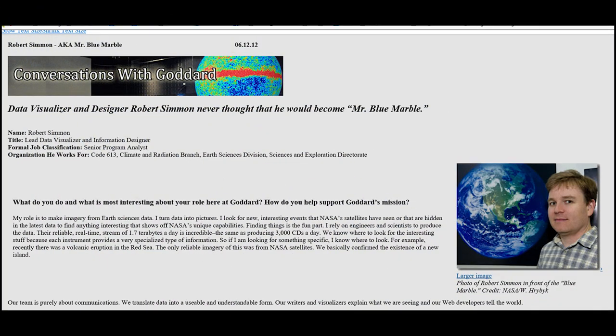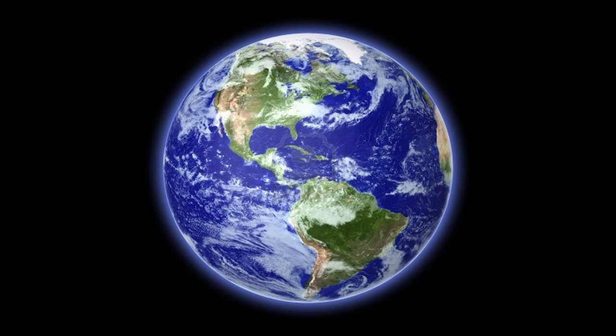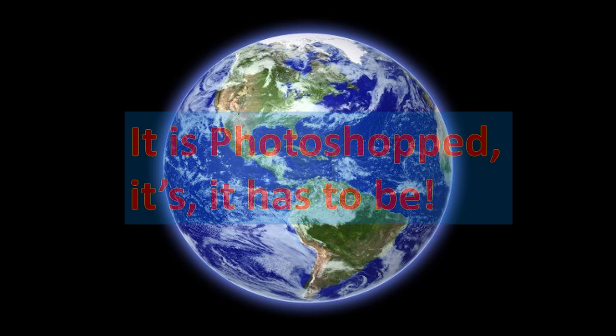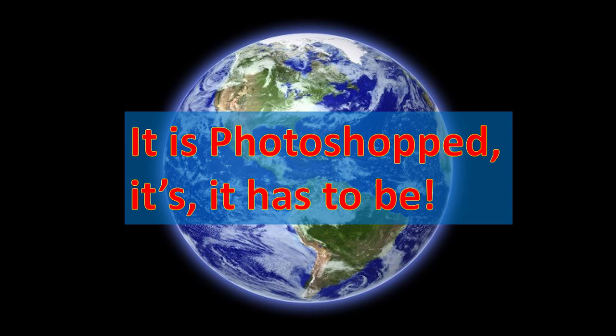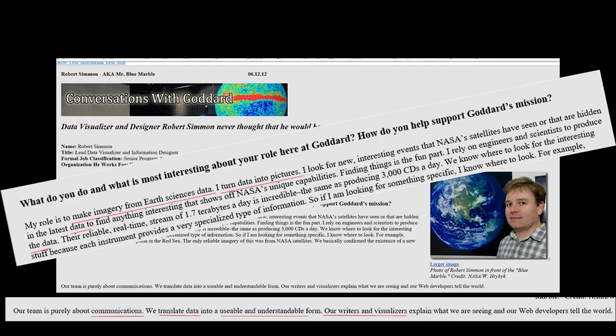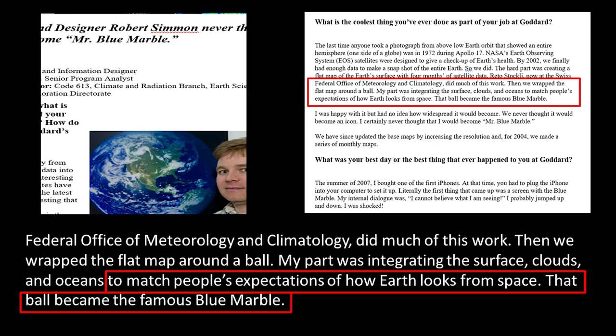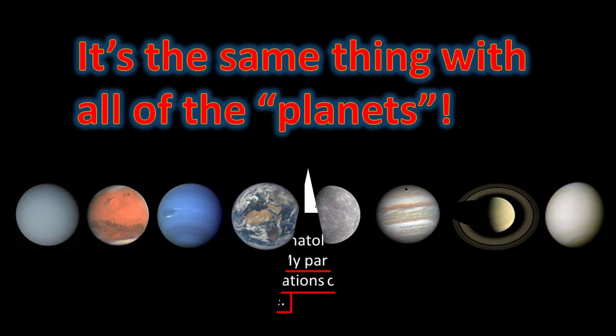There's a NASA artist named Robert Simmons, featured in 'Conversations with Goddard.' Anybody with a first-edition iPhone had the Blue Marble image of Earth on the flash screen — he's the guy that actually made that picture. He even says in an interview it is Photoshopped; it has to be. He talks about how he uses data to formulate whatever he wants. Interestingly, he said he did these things to match people's expectation of how Earth looks from space. He admits it. Everything out there that we see is not necessarily what they actually get — it is somebody's interpretation.